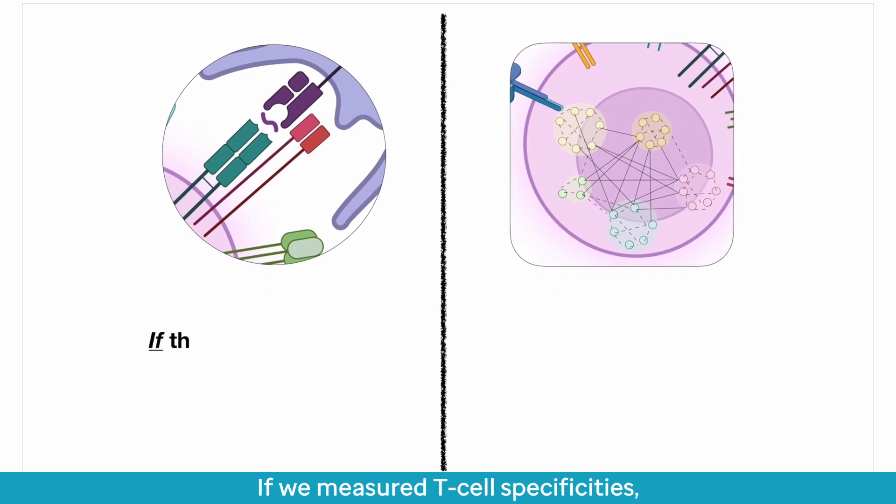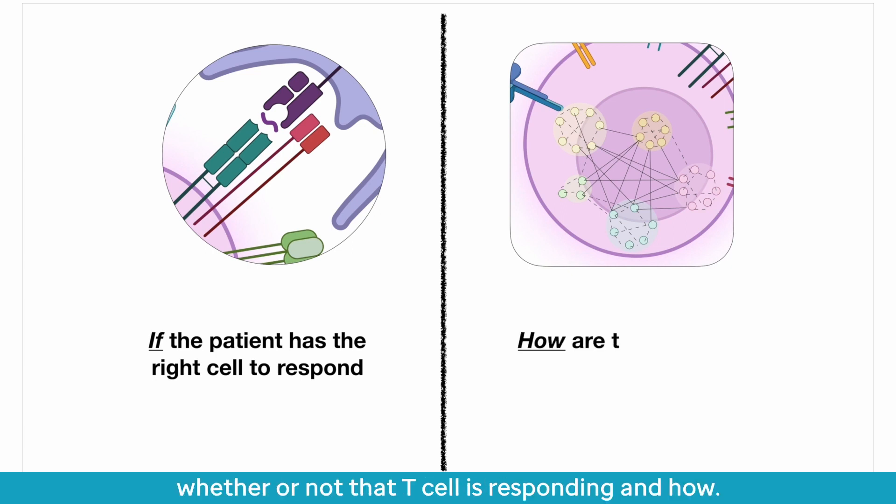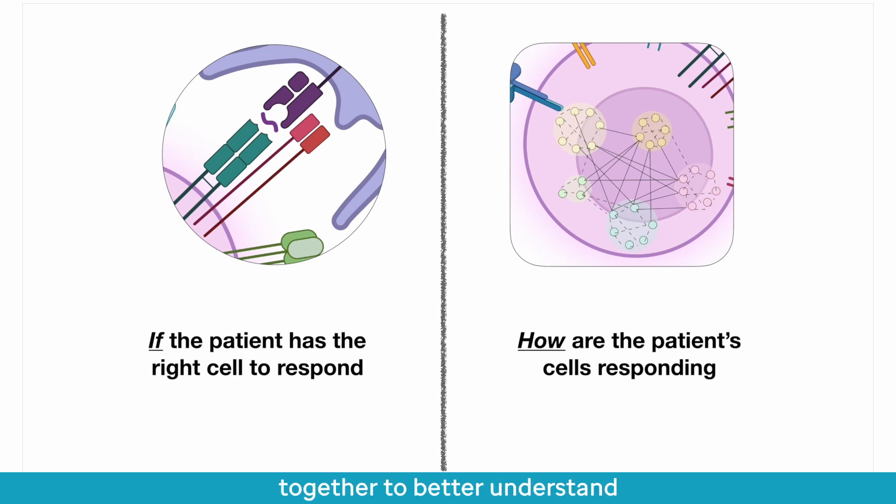If we measure T cell specificities, we can tell if the patient has the capacity to respond. But by simultaneously capturing the cellular state in the form of gene expression, we can tell whether or not that T cell is responding and how. The question then became, how can we integrate these two pieces of information together to better understand if and how T cells from a patient will respond to infection or cancer? That's why we developed CONGA, to link TCR specificity with cellular state.